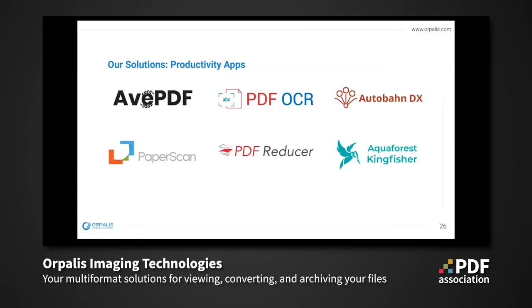Our productivity apps for end users include AVPDF, an innovative web application to fully manage PDF files and documents online — you can hyper compress, sign, convert, split, merge, organize, and do anything you want with your PDF files directly in your browser. It is totally free to use at the moment. Paperscan is one of our most popular apps, regularly quoted in the top five scanning apps on the market, offering a full-featured document processing suite including OCR, hyper compression, and annotation support. PDF OCR provides a simple way to convert any document to a searchable PDF with an innovative layout analysis feature. PDF Reducer is a powerful tool to get PDF files reduced to minimum size while keeping the best quality, providing different and innovative in-house compression techniques.